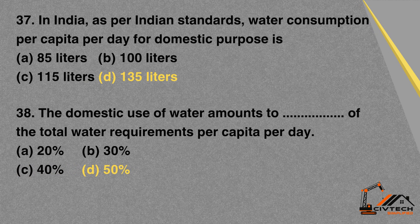MCQ 37: In India, as per Indian standards, water consumption per capita per day for domestic purpose is — A. 85 liters. B. 100 liters. C. 115 liters. D. 135 liters. Correct option: D. 135 liters.